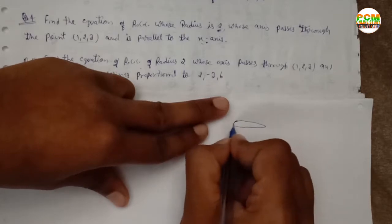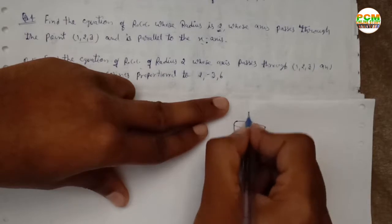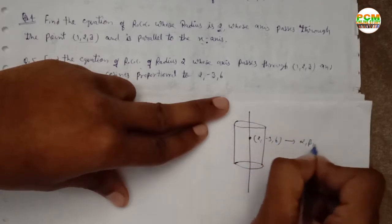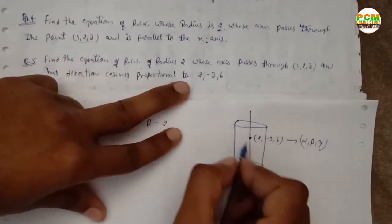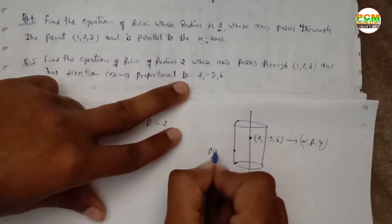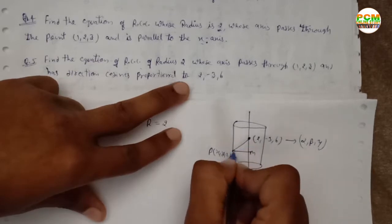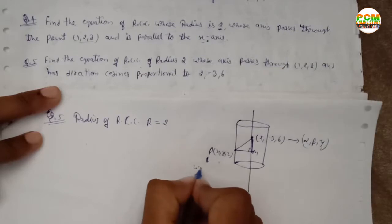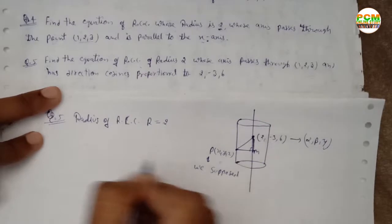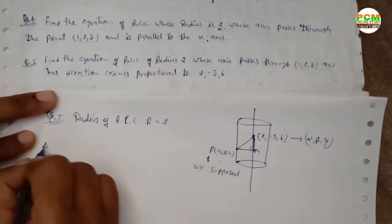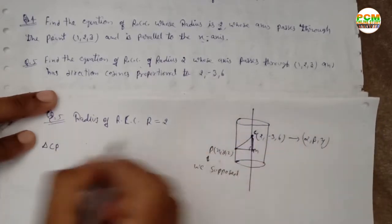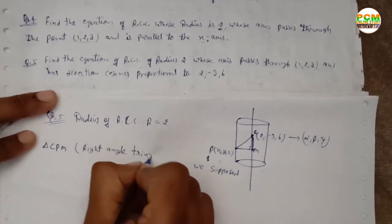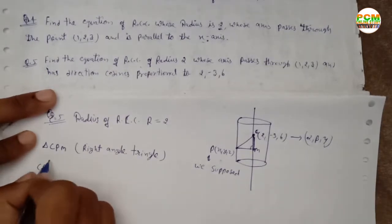So here we have a right circular cylinder whose axis passes through point (1, 2, 3). Suppose here is a point — alpha, beta, gamma — and a supporting point P(x, y, z). Here M is a point on the axis, and we consider the right angle triangle CPM.